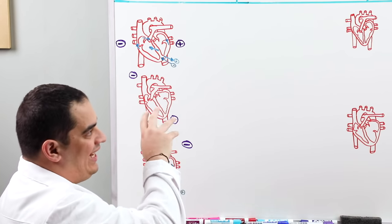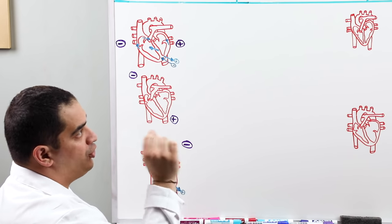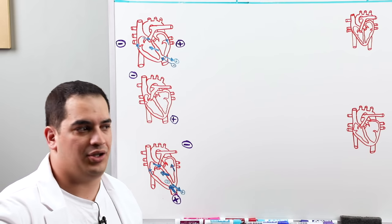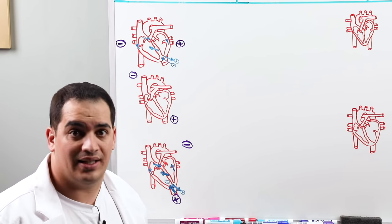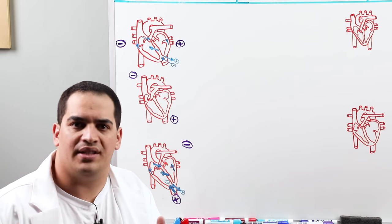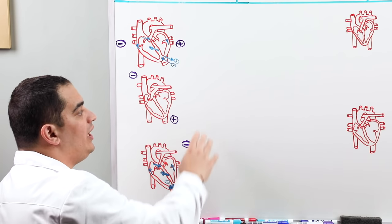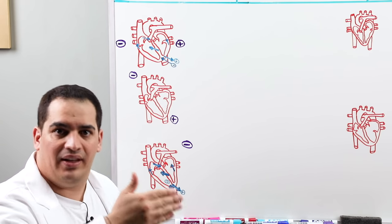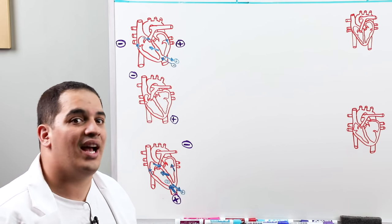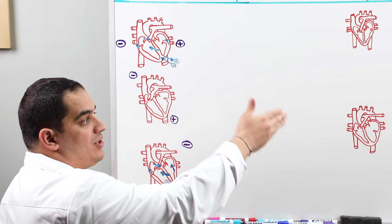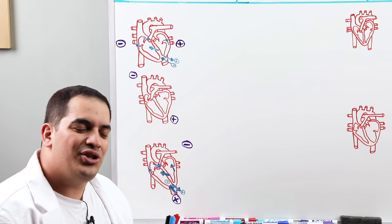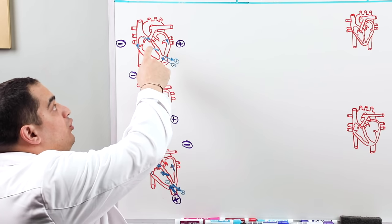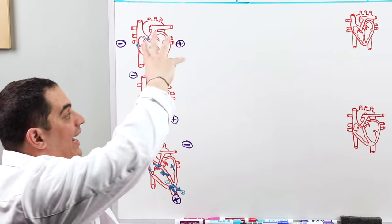We've covered what the EKG waves, segments, and components should look like in one lead — lead two. But a 12-lead EKG has 12 total leads: three limb leads (leads one, two, three), three augmented unipolar limb leads (AVR, AVL, AVF), and six precordial or chest leads (V1 to V6). Three plus three plus six equals 12 total leads. We should understand what all of these waveforms look like using the same vector approach.